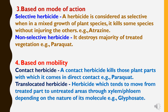The fourth classification of herbicides is based on mobility. Herbicides are categorized into two types. First is contact herbicide — a contact herbicide kills those plant parts with which it comes in direct contact. Example: paraquat. Second is translocated herbicides — herbicides which tend to move from treated parts to untreated areas through xylem and phloem depending on the nature of its molecule. Example: glyphosate.